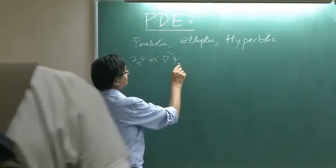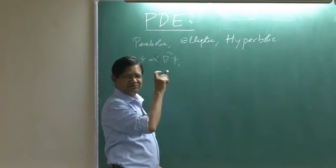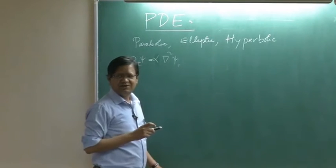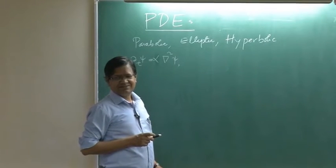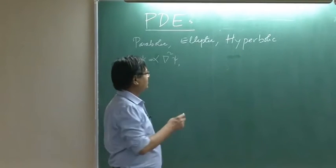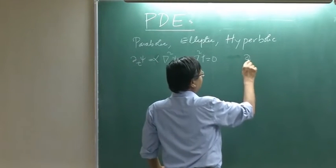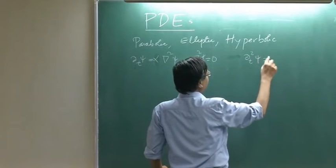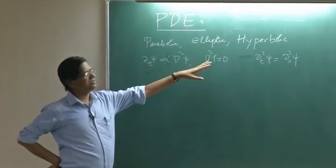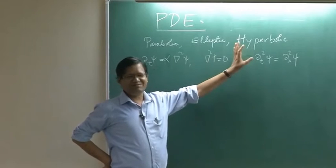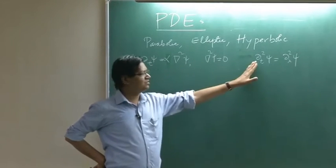Elliptic equation, example of elliptic equation - you done this in your math course. Wave is not elliptic, wave is hyperbolic. Laplace's equation is elliptic, and hyperbolic is psi. We will do only these two classes, not this class. I will make a slight excursion into it, but I will do these two, not this, it is more complicated.